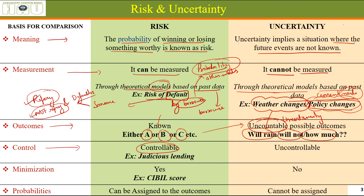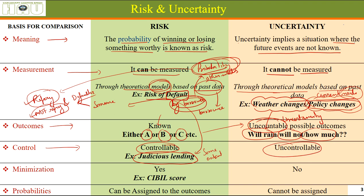Can we control risk? It is controllable. By studying earlier data, making models, and fitting borrower details, we can estimate the probability of loan repayment and by judicious, careful lending we can control risk to some extent — not fully, but to some extent. Weather, however, is not controllable at all. Can we minimize risk? Yes. You might have heard of a CIBIL score — people repaying loans on time have a good CIBIL score, meaning good credit record, so lending only to people with a good CIBIL score keeps our money safe. There is no such method of minimization for uncertainty.